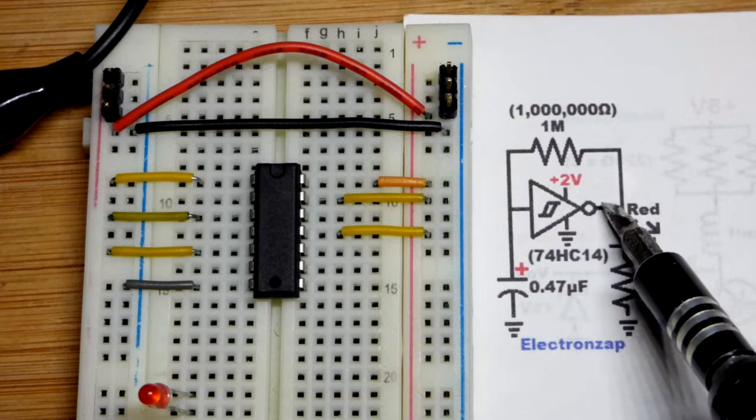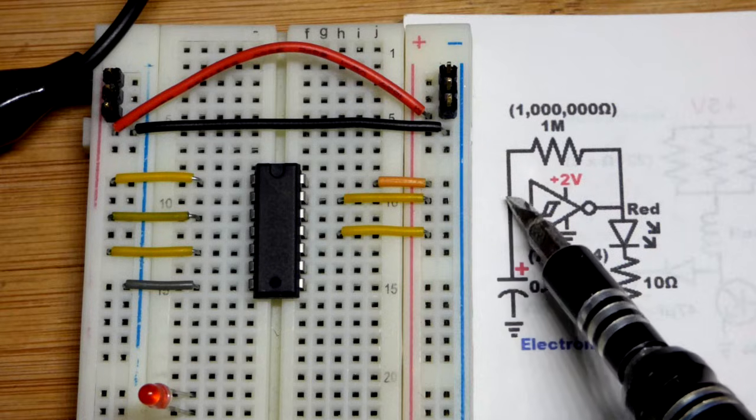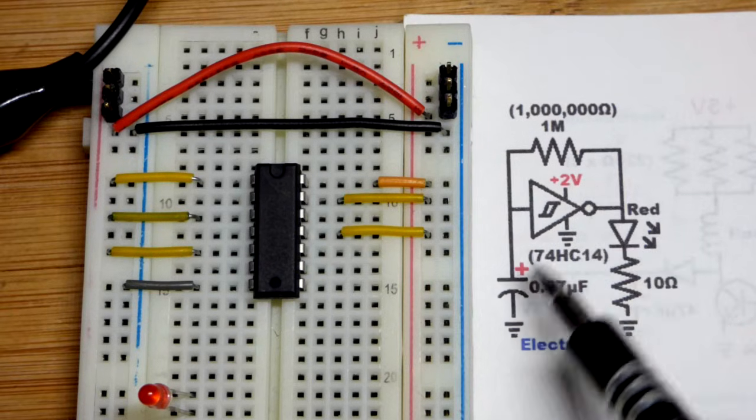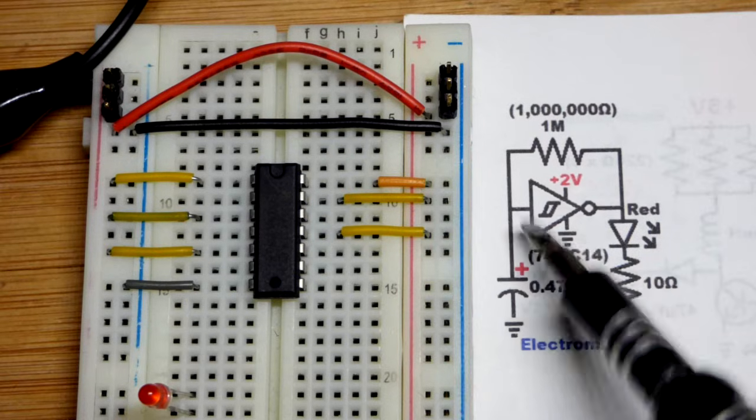So we've got a capacitor. When the output is charging the capacitor, it's going to raise its voltage until it's high enough to set the output low. And then it will discharge the capacitor. That's the basic principle. A pretty simple oscillator.